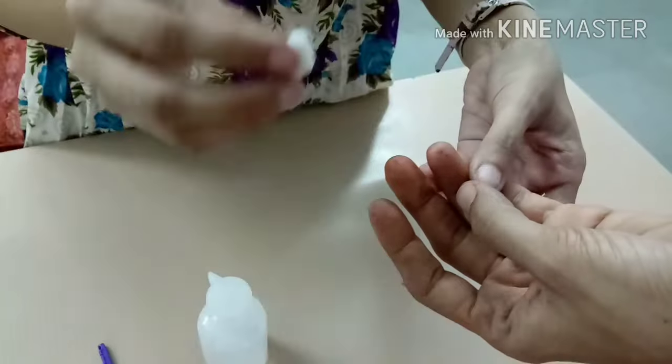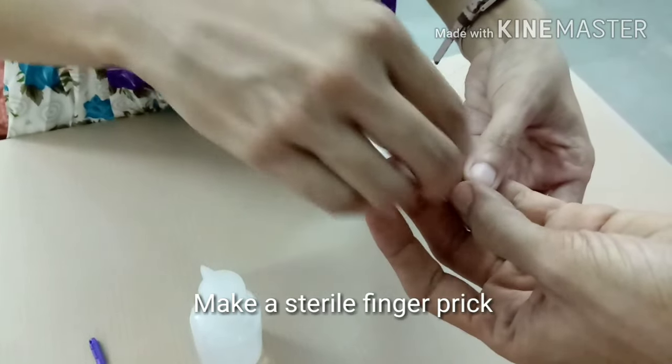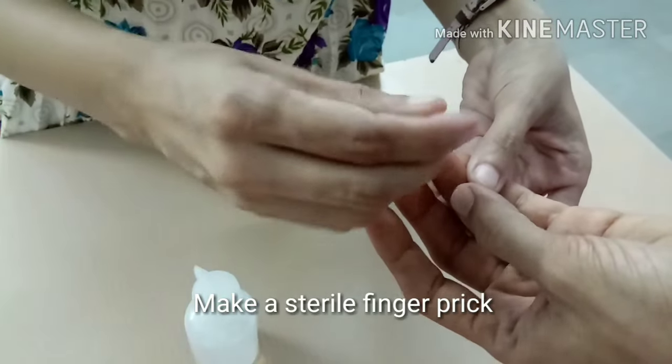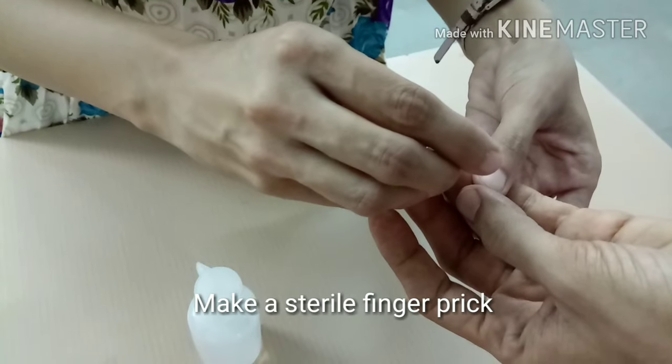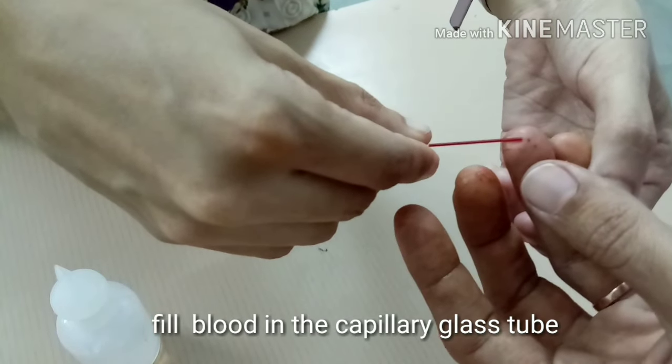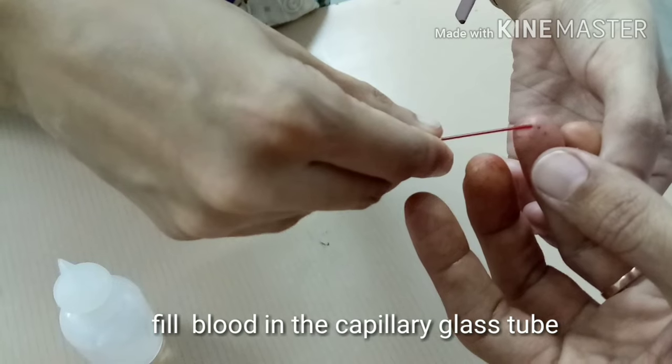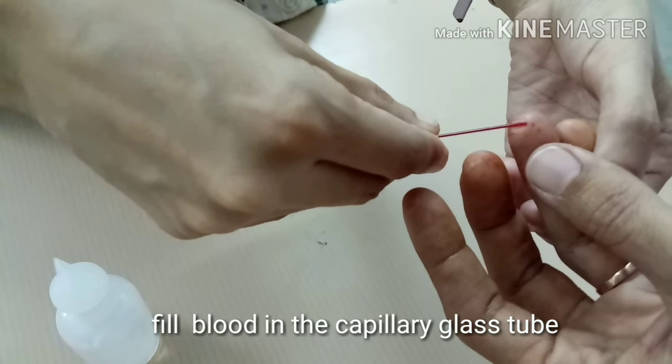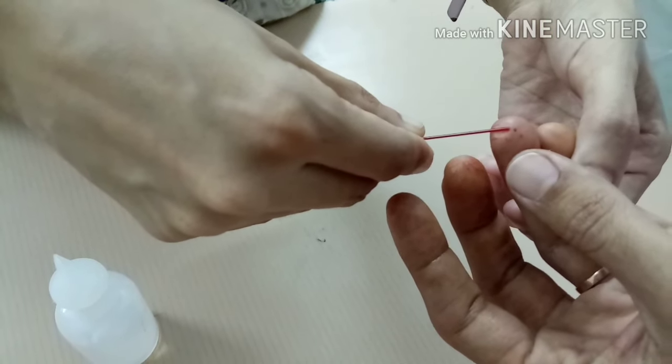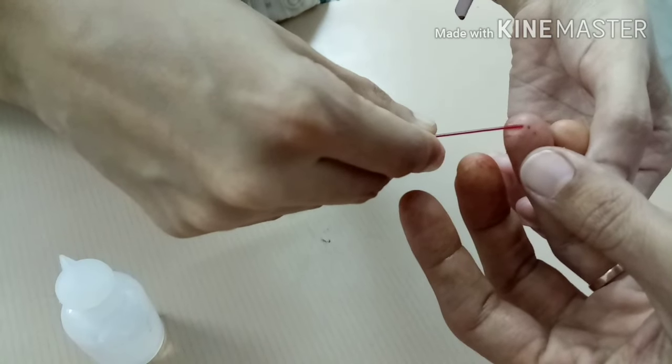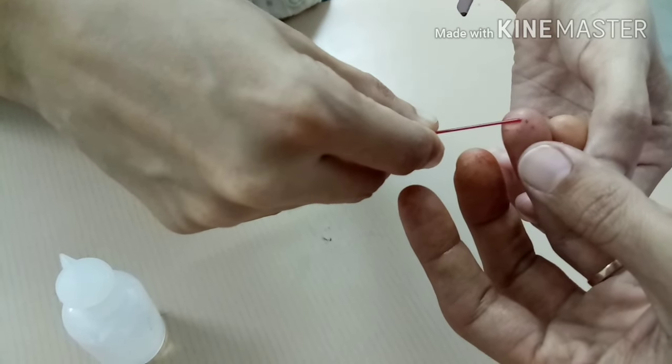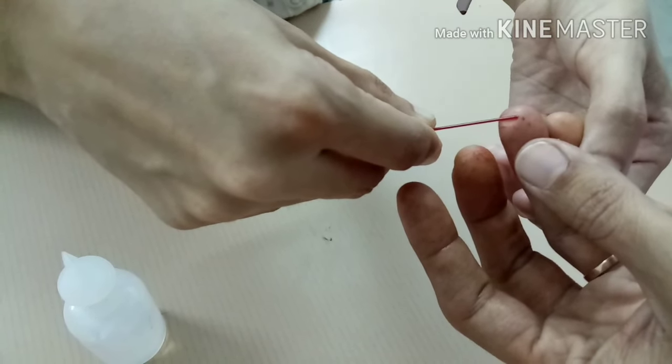Procedure. Make a sterile finger prick about 3-4 mm deep. Introduce one end of capillary glass tube next to the blood drop for the blood to flow into the capillary tube. While doing this, hold the other end of the capillary glass tube at lower level and record the time.